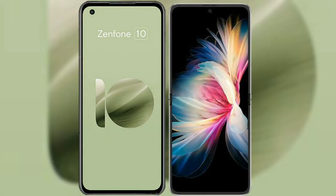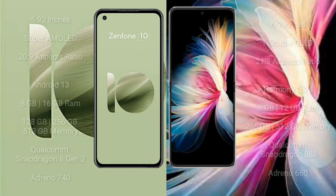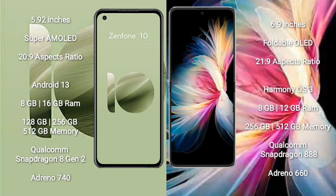I will compare the new Asus Zenfone 10 with the Huawei P50 Pocket. The Asus Zenfone 10 comes with a 5.92-inch Super AMOLED display with an aspect ratio of 20:9. The Huawei P50 Pocket comes with a 6.9-inch foldable OLED display with an aspect ratio of 21:9.